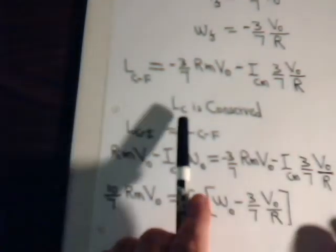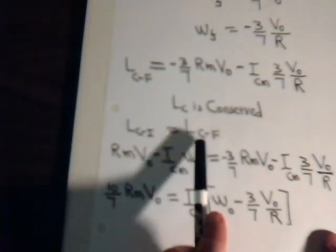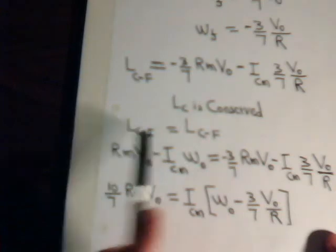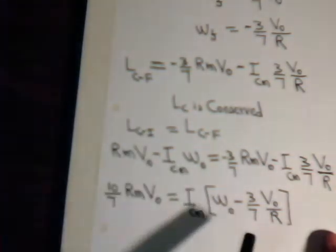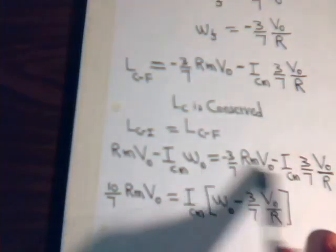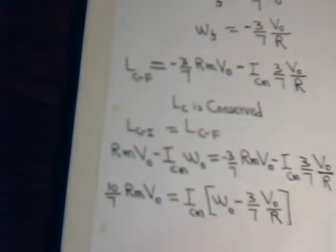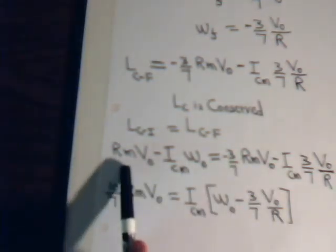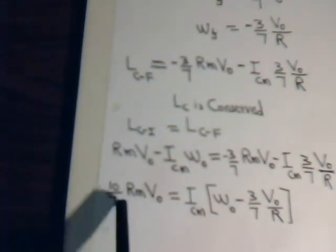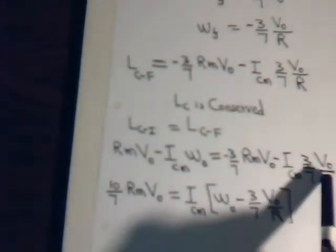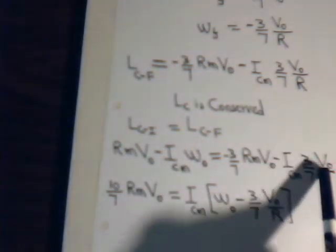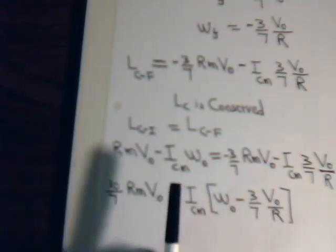Since angular momentum about C is conserved, what it was initially must equal what it is when the ball enters pure roll. Setting initial equal to final and rearranging, we bring the rmv₀ terms together to get ten-sevenths rmv₀ on one side, and factor out the moment of inertia term to get I_cm times the quantity (ω₀ minus three-sevenths v₀ over r) on the other.